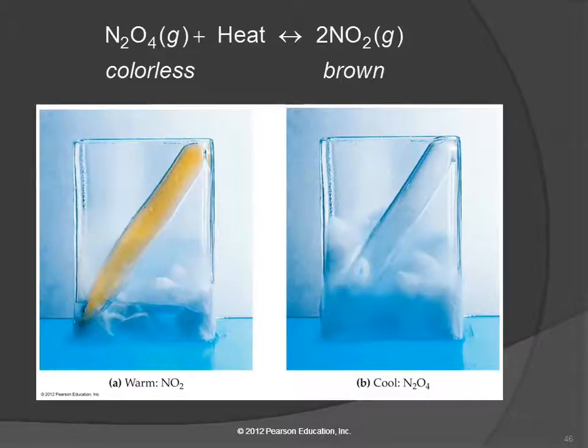Student asks: If color is just light waves, how does heating and cooling it down change the way light reacts with it? Instructor responds: Well, it's not that it's changing how it reacts with it, it's changing the compound. And so this one is colorless because it's a different combination of atoms. This is two nitrogens and four oxygens, and over here we've got one nitrogen and two oxygens, so that's like half of the molecule. And they absorb and emit light differently than when they're combined together. You guys ask a lot of good questions.